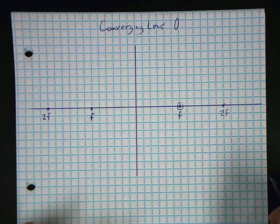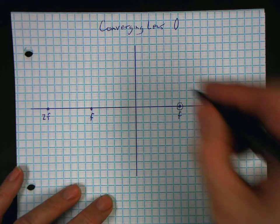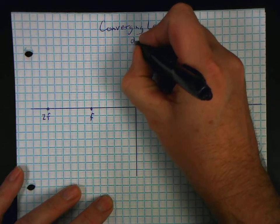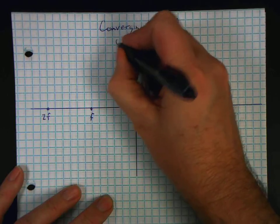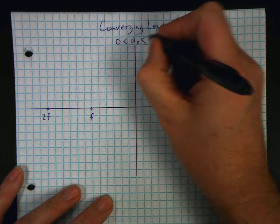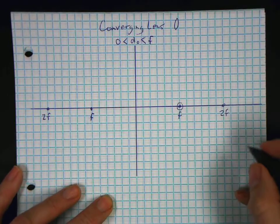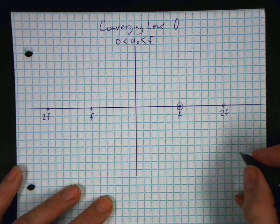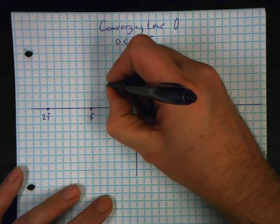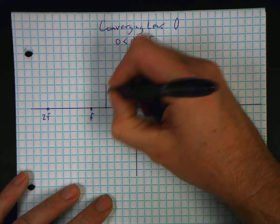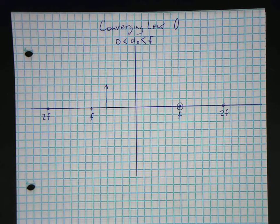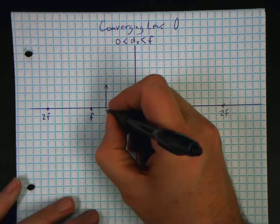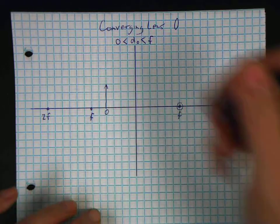Let's start with an object where the distance to my object is bigger than 0 but smaller than the focal length. And I'm going to put that one over here. I'm going to make it 3 boxes tall. I am then going to draw a few rays in. So this is my object.